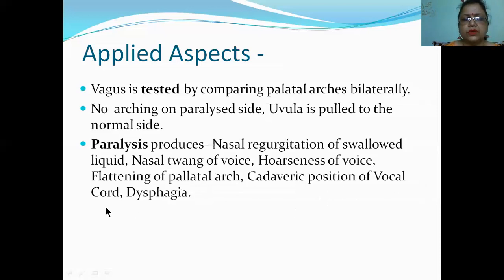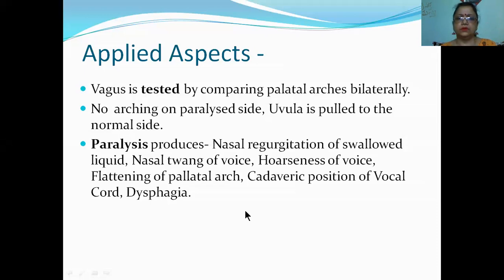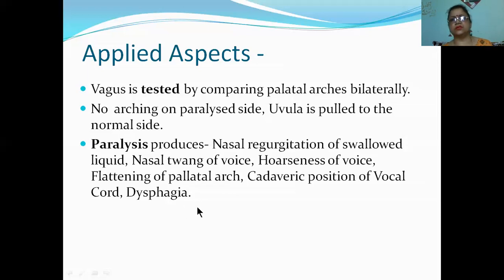Cadaveric position of the vocal cord: normally there is a gap in the rima glottidis, but if the nerve is paralyzed, the cord lies straight. If both sides are paralyzed, both cords lie side by side. Dysphagia means difficulty in swallowing - because the esophagus is also supplied by the esophageal plexus of the vagus.